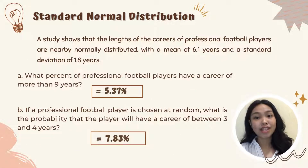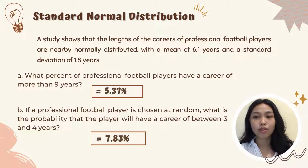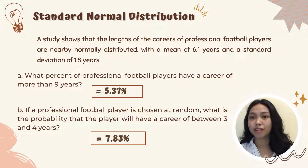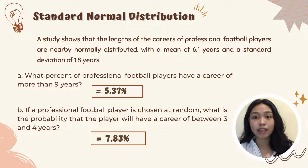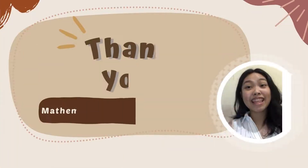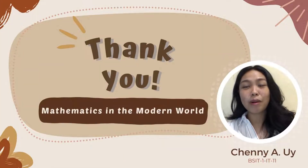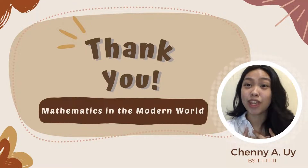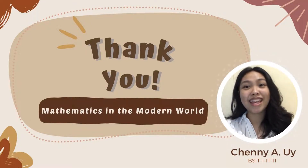So, as a recap of our lesson, when asked to find the percentage of professional football players who have a career of more than 9 years, our answer will be 5.37%. And 7.83% naman ang probability of choosing a random player who has a career between 3 and 4 years. And that will be all for this video about Standard Normal Distribution. Again, I am Cheney A. Uy and thank you for watching!